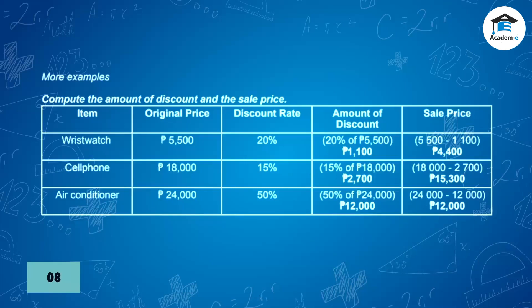Item: cell phone, original price 18,000 pesos, discount rate 15%. Amount of discount: 15% of 18,000 pesos = 2,700 pesos. Sale price: 18,000 pesos minus 2,700 pesos = 15,300 pesos.